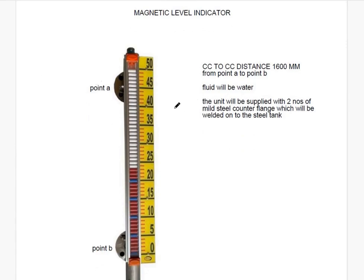This is point A. This is point B. The distance between A and B - we calculate this distance as 1600 millimeters.